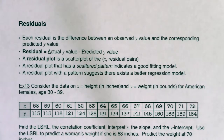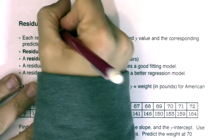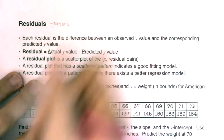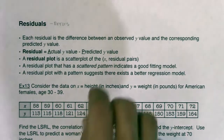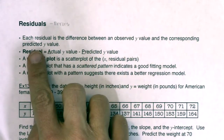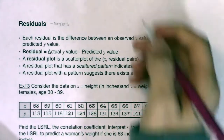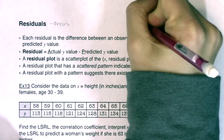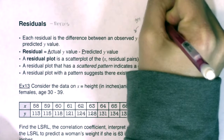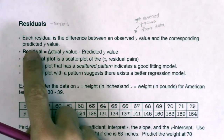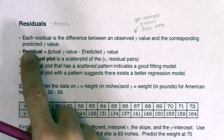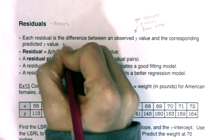Let's move into the next major topic from chapter 12: residuals. Residuals are our fancy term for errors. When we're predicting, we make errors — it's impossible in the real world to be perfect. Each residual is the difference between your observed y value and the corresponding predicted y value. Observed y values come from your actual data, and predicted y values come from the LSRL.